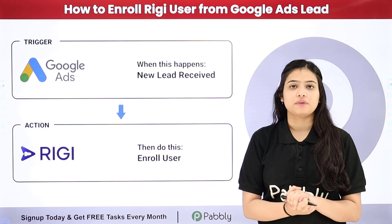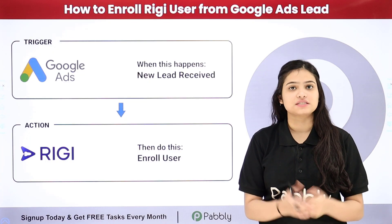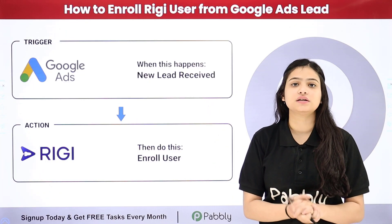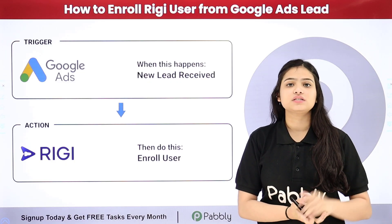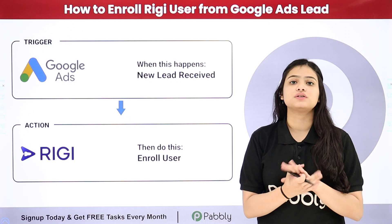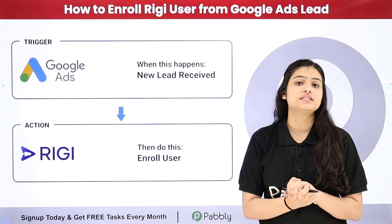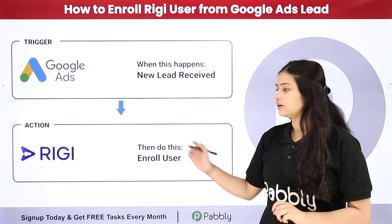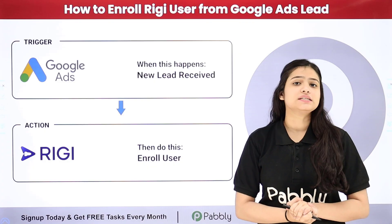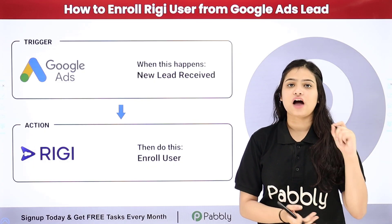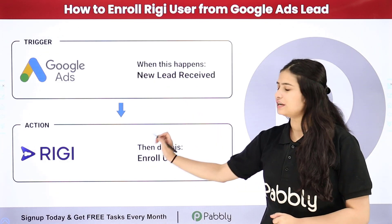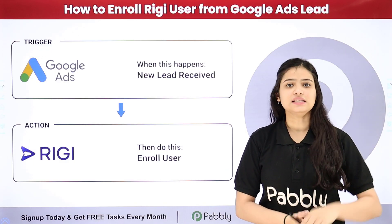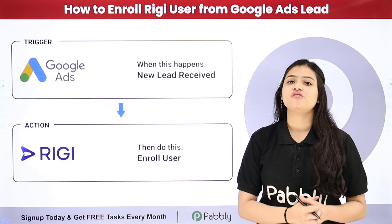Now to promote my business and my courses, I am using Google Ads. I am running an ad campaign on Google Ads and I have also created a lead gen form. My objective is that whenever an interested student registers by submitting that lead gen form, automatically that person should be enrolled as a user in Riggi. To automate this entire process, we will set up a connection between Google Ads and Riggi without any coding or programming skills, simply with the help of Pabbly Connect.